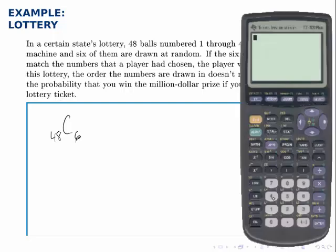If we use the calculator, 48 is N. Go to the math, probability menu, select NCR, 6. There are 12,271,512 ways that you can select 6 numbers out of these 48 numbers.